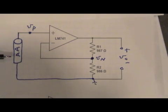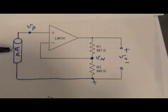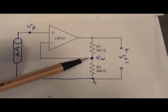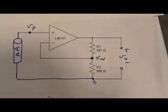For the input voltage, let's take a AA battery, a one and a half volt battery. You can see the actual values of R1 and R2 are 987 ohms and 986 ohms respectively. And we'll use the 741 as our op amp. And let's measure the voltage at the positive terminal, at the negative terminal, and at the output.